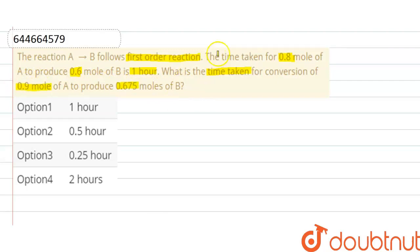Here it's mentioned that it is a first order reaction and the relation is: rate constant equals 2.303 divided by t, log of initial concentration divided by final concentration.